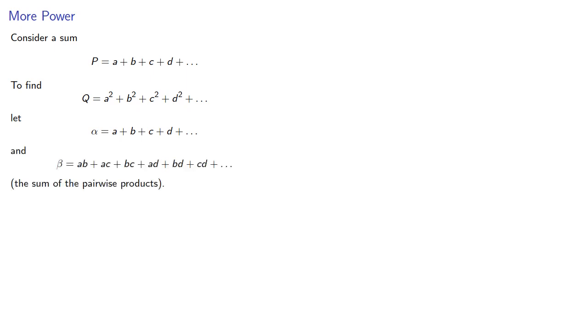So how can we use this? Consider a sum of terms, which we'll call p. If we want to find the sum of the squares of the terms, let alpha be the sum of the terms and beta be the sum of the pairwise products of the terms. Then with a little effort we can show that q is alpha squared minus 2 beta.